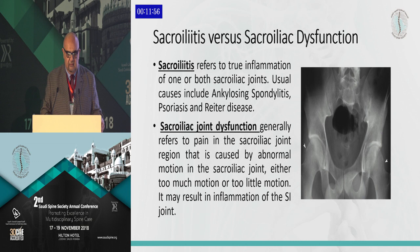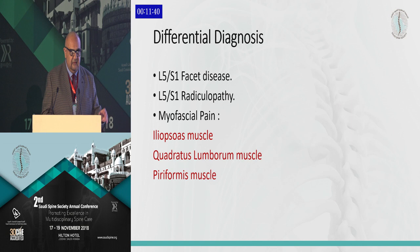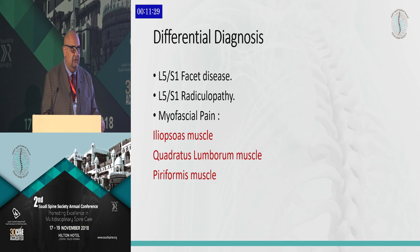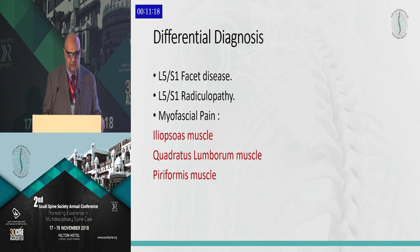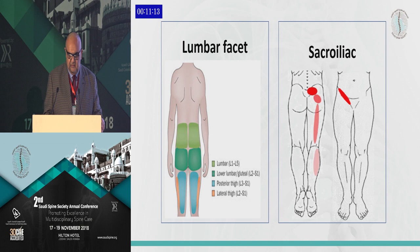True sacroiliitis occurs mainly in rheumatic diseases such as ankylosing spondylitis and psoriasis. SI dysfunction is the commonest form we see in practice but can also turn into inflammation in the SI. As for differential diagnosis — I've done many SI injections, and the ones that failed I usually send to physiotherapy to get an EMG, and most of them had S1 radiculopathy. Always remember: SI pain can be S1 radiculopathy. Besides that, other myofascial pain syndromes and lumbar facet disease like L5-S1.